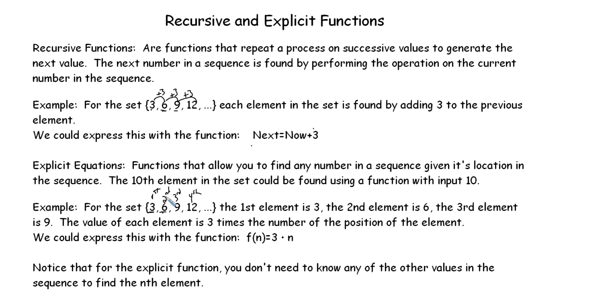is three times the location of the element. So the second element was 3 times 2, the third element was 3 times 3, the fourth element was 4 times 3. So the fifth element would be 5 times 3. So you could find any element if you knew which element you were looking for. So the nth element would equal in this situation 3 times n.